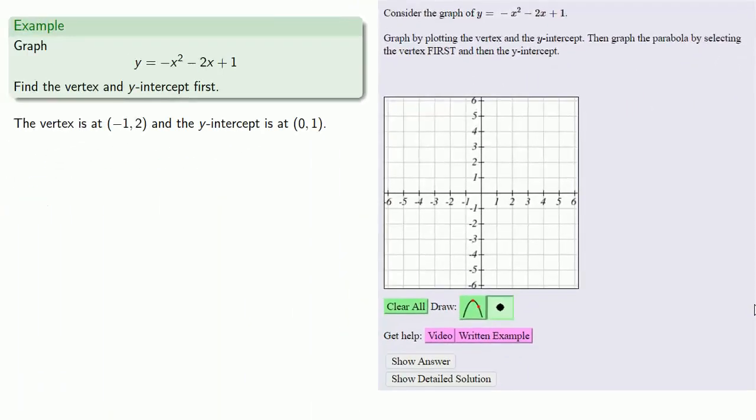First, we'll make sure the point tool is selected - we'll go to this thing that looks like a point and select it. Then we'll go to the first point, the vertex at (-1, 2), and put a point there. Then we'll go to the other point at (0, 1) and put a point there.